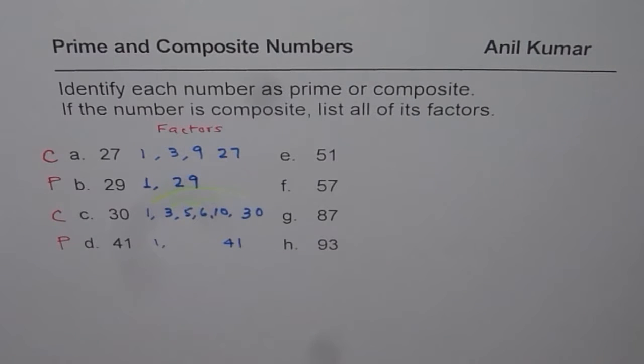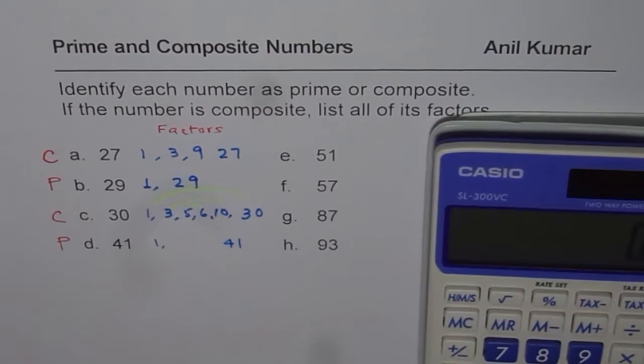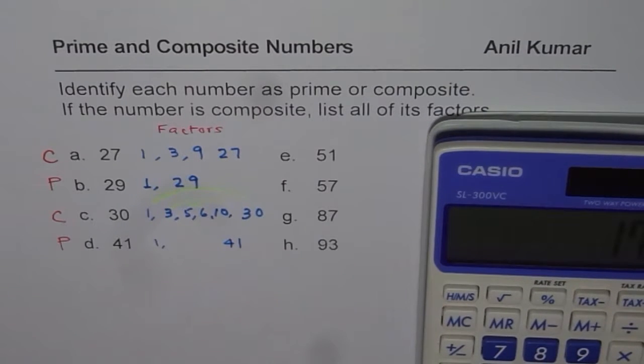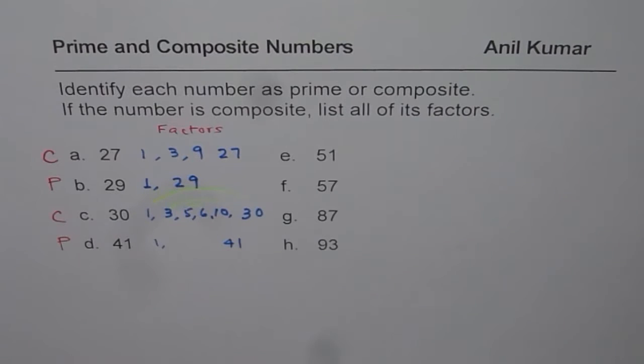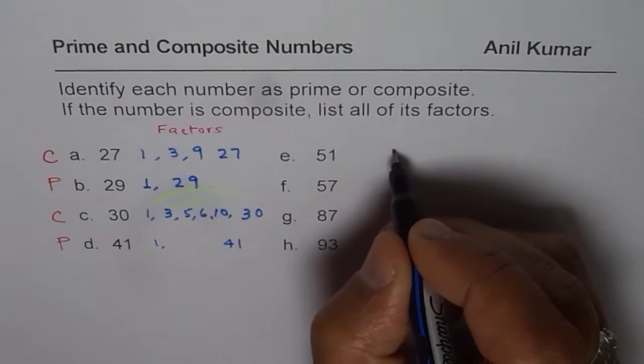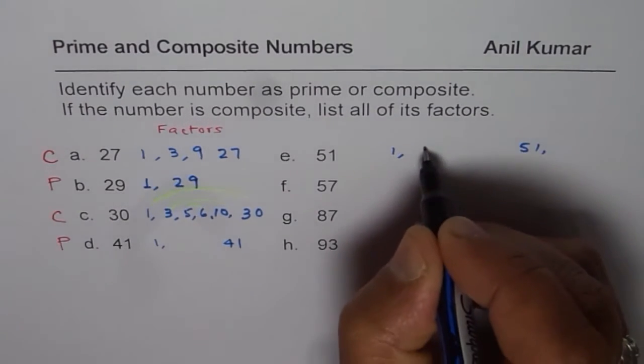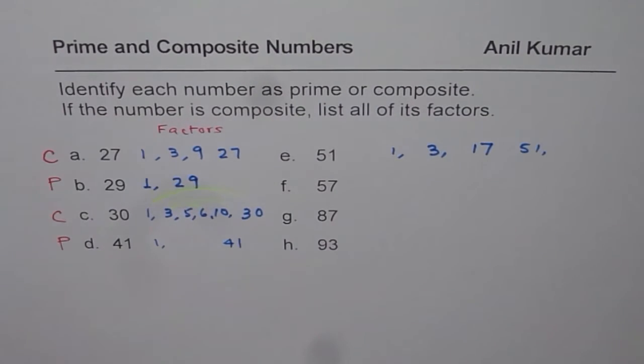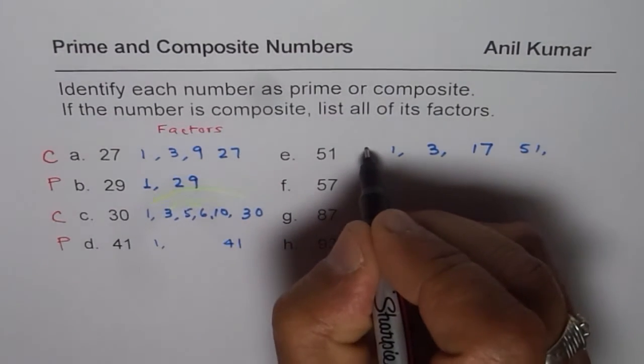Now let's look into 51. Some of the students get 51 sometimes wrong. Let's look into 51. If I add 5 and 1, I get 6. So that means it can be divided by 3. So let me divide 51 by 3. What do you get? 17. So it has more than 2 factors. So 51 could be written as 1 times 51 and also 3 times 17. Since it has 4 factors, it is a composite number.